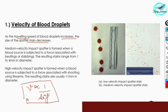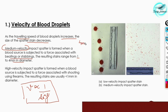Medium velocity impact spatter is formed when a blood source is subjected to a force associated with beatings or stabbings — for example, using a knife. The resulting stains will be 1 to 4 millimeters in diameter. Low velocity stains are usually normal stains falling under the force of gravity, and their diameter is equal to or greater than 4 millimeters.